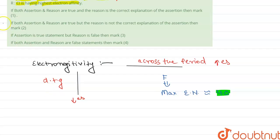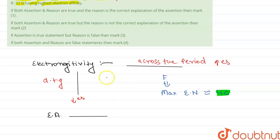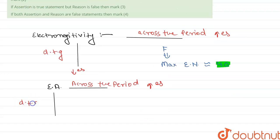Now we will move to the reason that chlorine has the highest electron affinity. Electron affinity is the amount of energy released when an electron is added to a neutral atom. The trend is that across the period, electron affinity increases, while on moving down the group, electron affinity decreases.